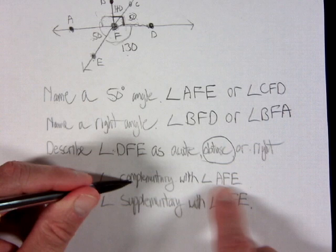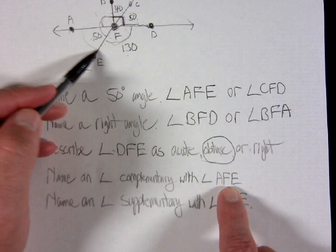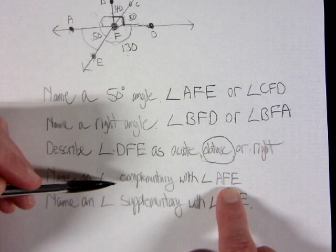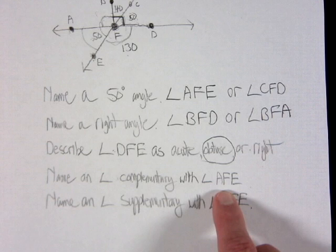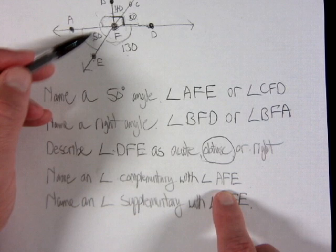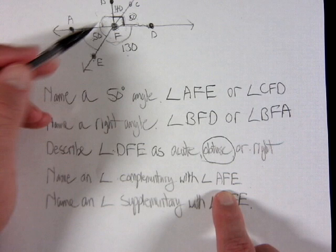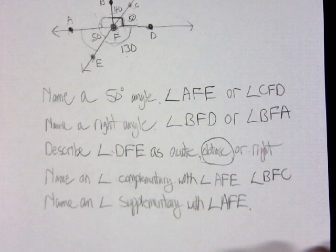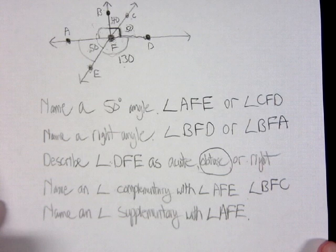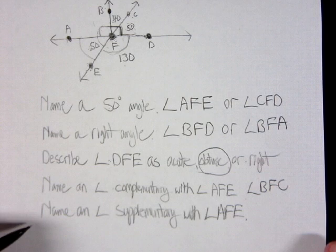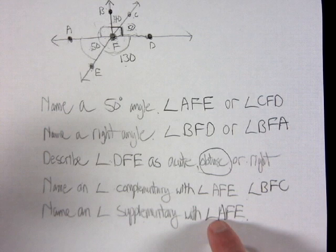The next question asks for an angle complementary with angle AFE. Angle AFE is 50 degrees; complementary means adding up to 90. So I need an angle that's 40 degrees, since 50 plus 40 equals 90. Looking at the diagram, angle BFC is 40 degrees, so angle BFC is the correct answer.